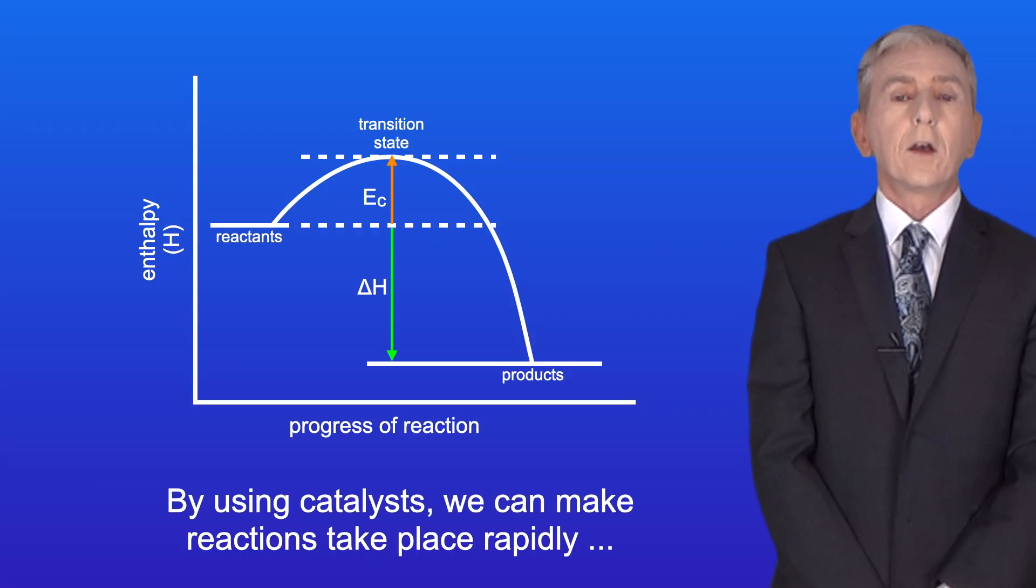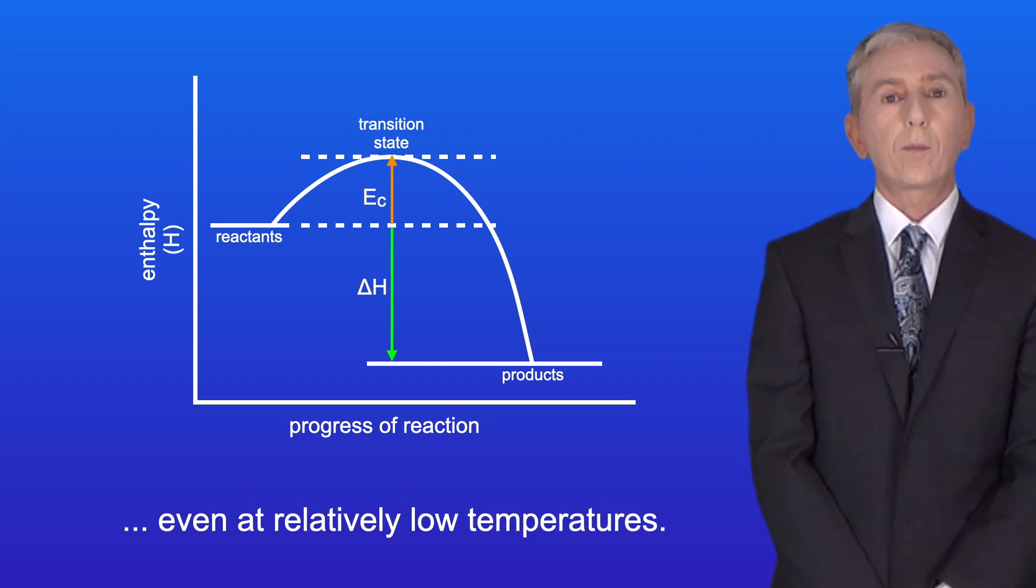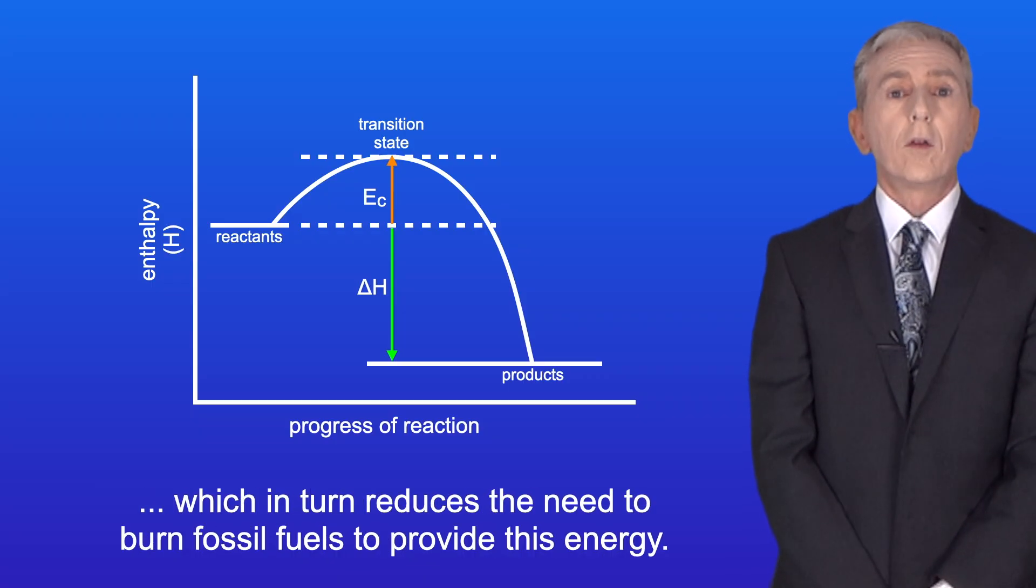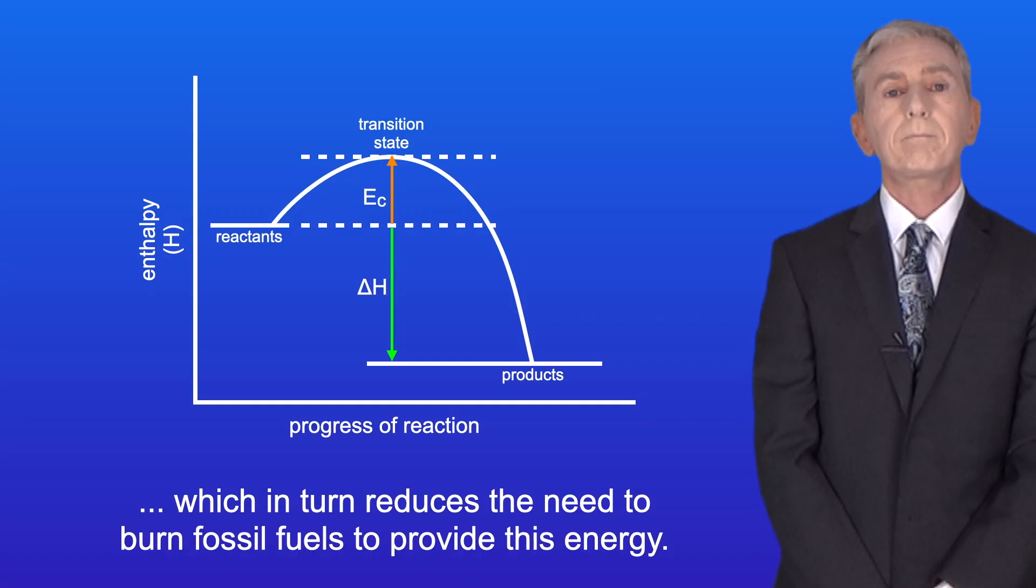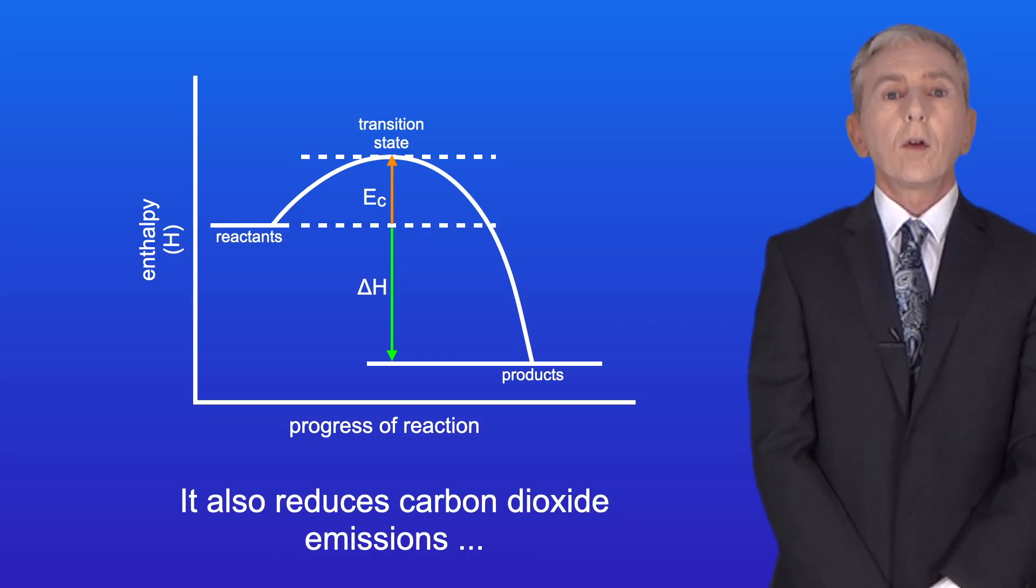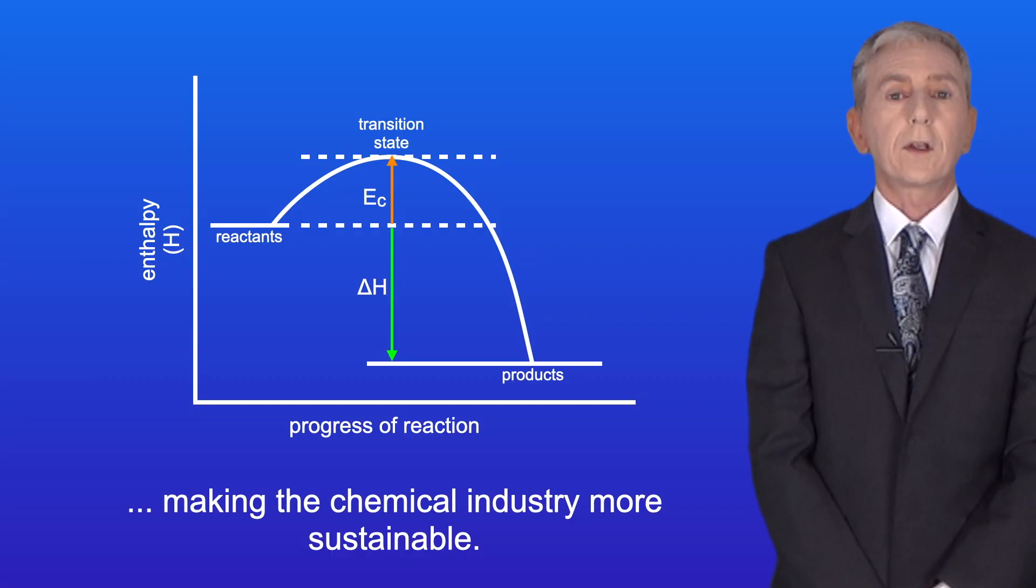By using catalysts, we can make reactions take place rapidly, even at relatively low temperatures. This reduces the amount of energy needed by the chemical industry, which in turn reduces the need to burn fossil fuels to provide this energy. This saves money, providing an economic benefit. It also reduces carbon dioxide emissions, making the chemical industry more sustainable.